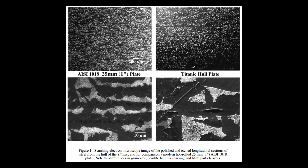More recovered steel samples revealed a ferrite-pearlite microstructure with large ferrite grains and large, coarse pearlite colonies. Large manganese sulfide and oxide particles were also present throughout the samples. However, sulfur content was unusually high, while manganese levels were low. Also, oxygen content was also high.